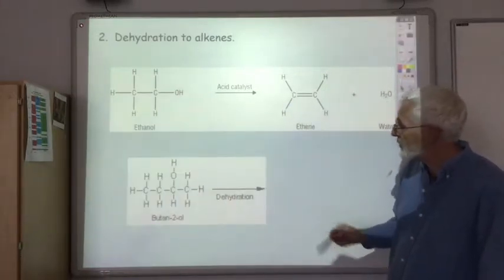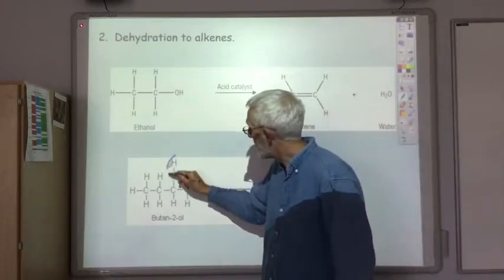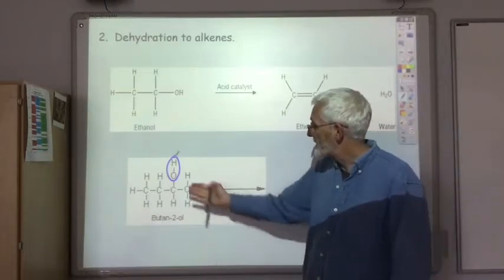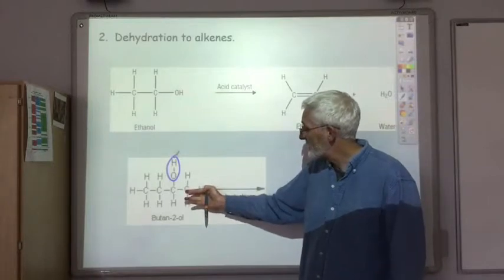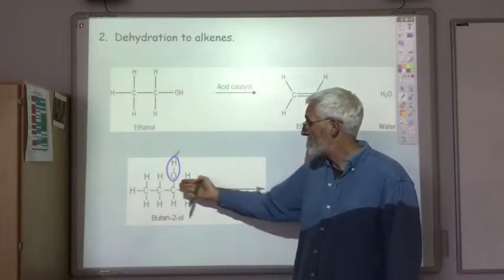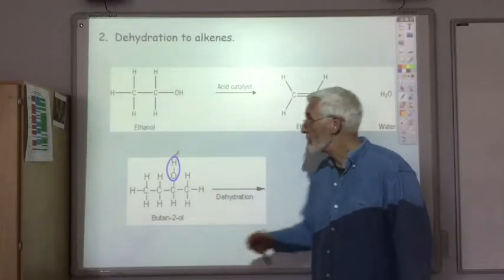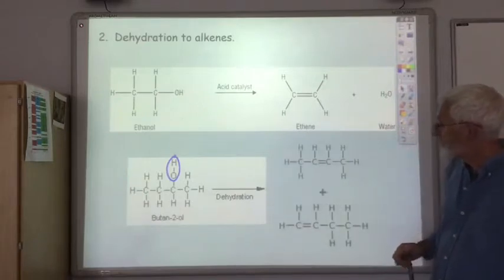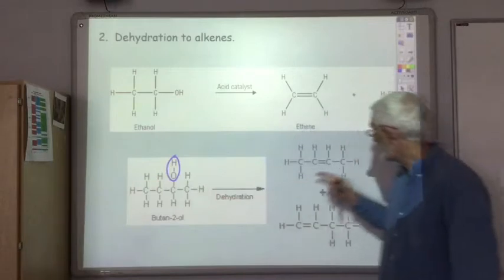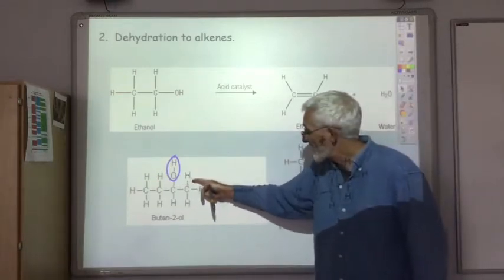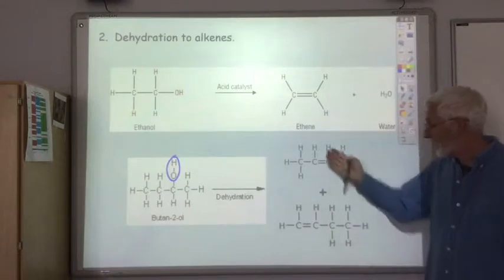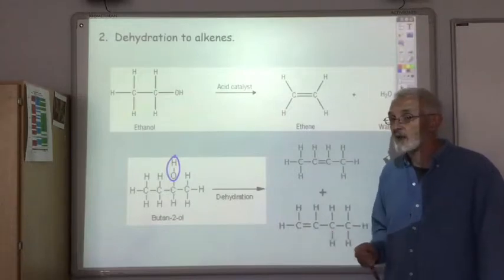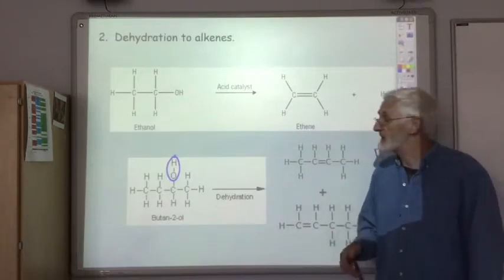When we dehydrate butane-2-ol we can remove the hydroxyl group from one carbon and then a hydrogen from an adjacent carbon. So it could be a hydrogen from this carbon or a hydrogen from this carbon. And depending what way around you'll get a different alkene. So if it's that hydrogen we produce but-2-ene. If it's one of these hydrogens we produce but-1-ene. In fact we do produce both of these. Okay so again that's not new to you, we covered that in the alkene section. So alcohol can be dehydrated to alkenes.